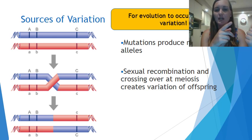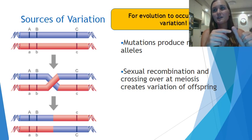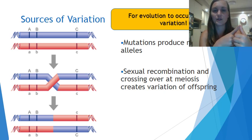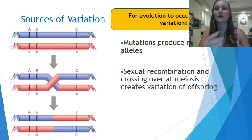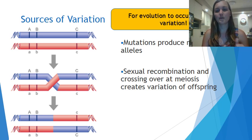There are a few ways variation happens. Mutations are a big one — mutations produce new alleles. Mutations can be positive, negative, or neutral. For evolution, we're looking at positive mutations: ones that create an advantage for the organism to survive in its environment. Another way of creating variation is sexual recombination, which happens during meiosis.